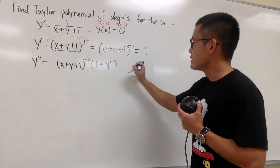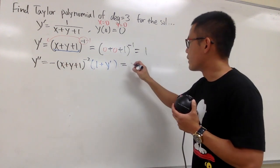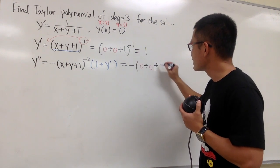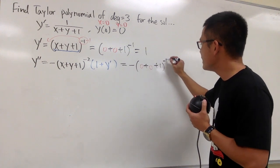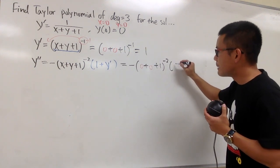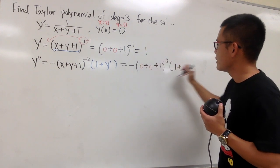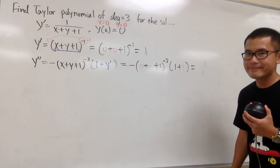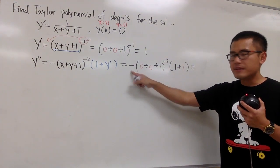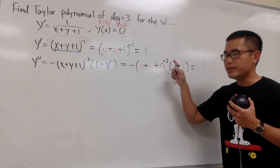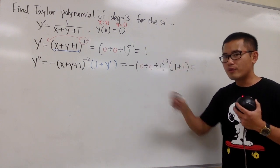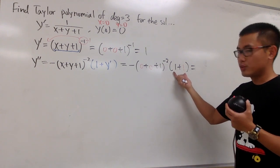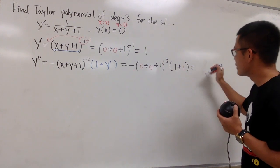So what do we have? Negative (0 + 0 + 1) to the negative 2 power, multiplied by (1 + 1). This is negative times 1 to the negative 2 — which is just 1 over 1 squared, so 1 — times 2. All together, y''(0) = negative 2.